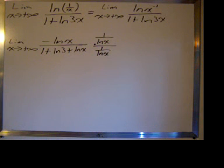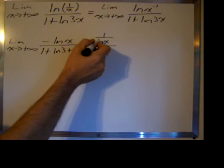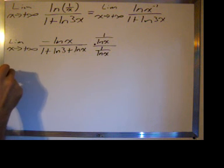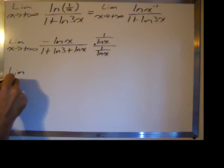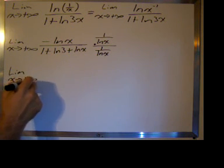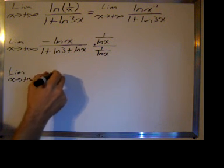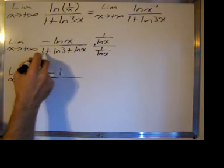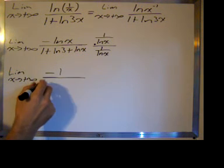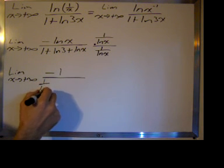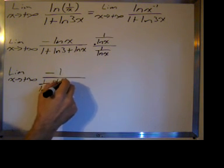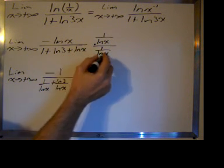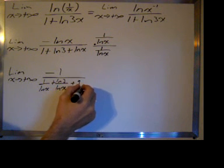When I distribute 1/ln(x) to the numerator, I get the limit as x approaches positive infinity of -1. When I distribute 1/ln(x) through the denominator, I get 1/ln(x) plus ln(3)/ln(x) plus ln(x)/ln(x), which is just 1.